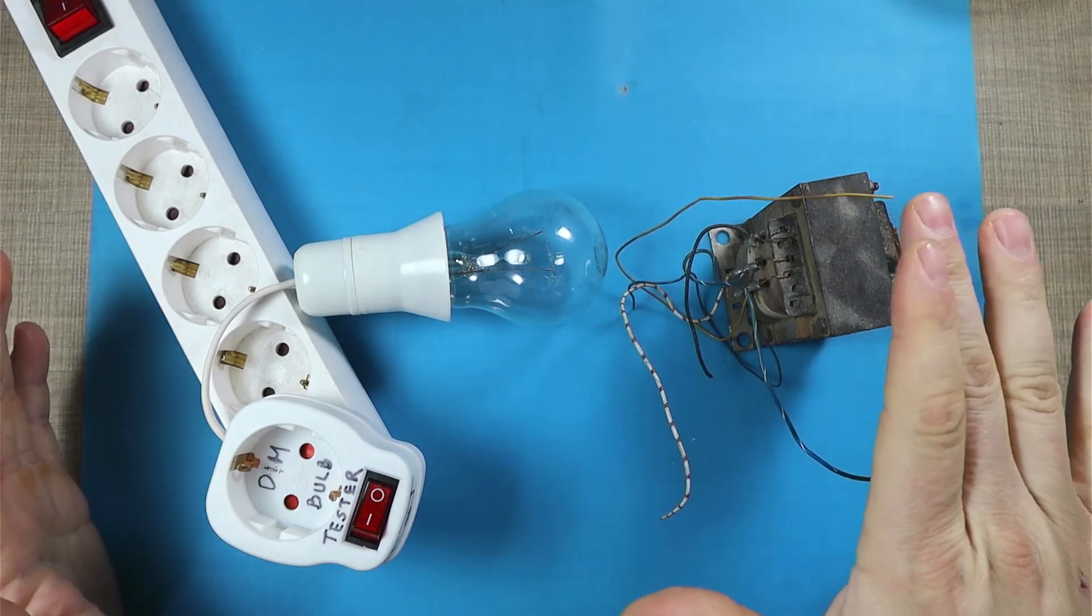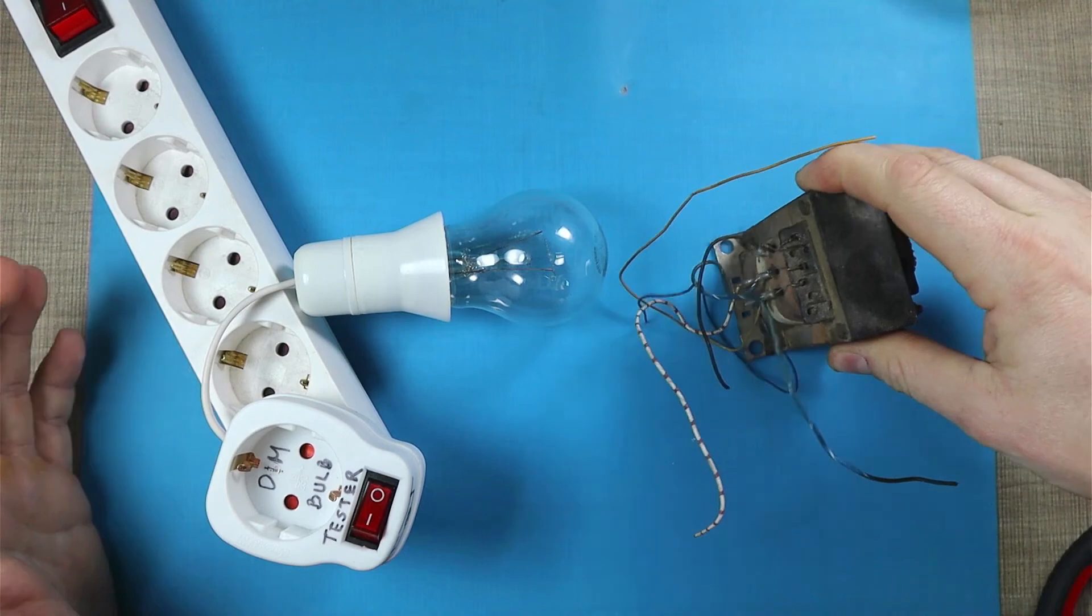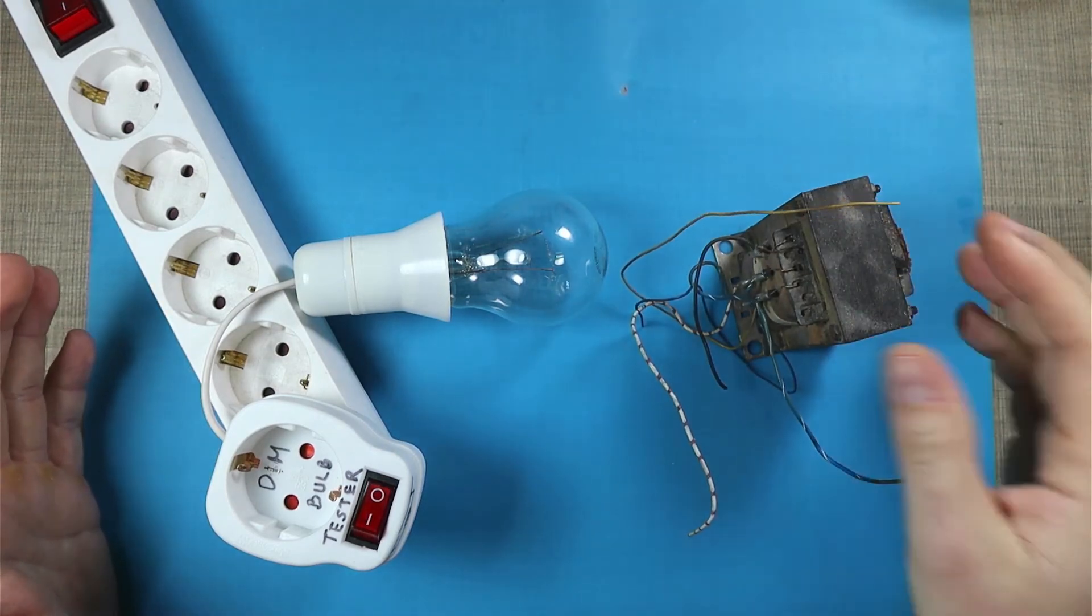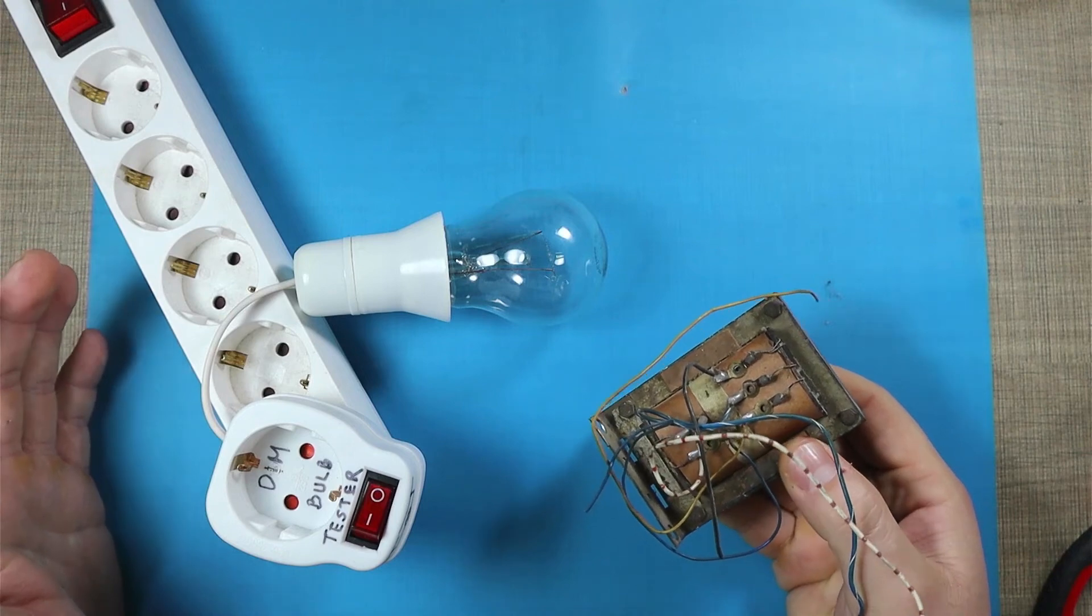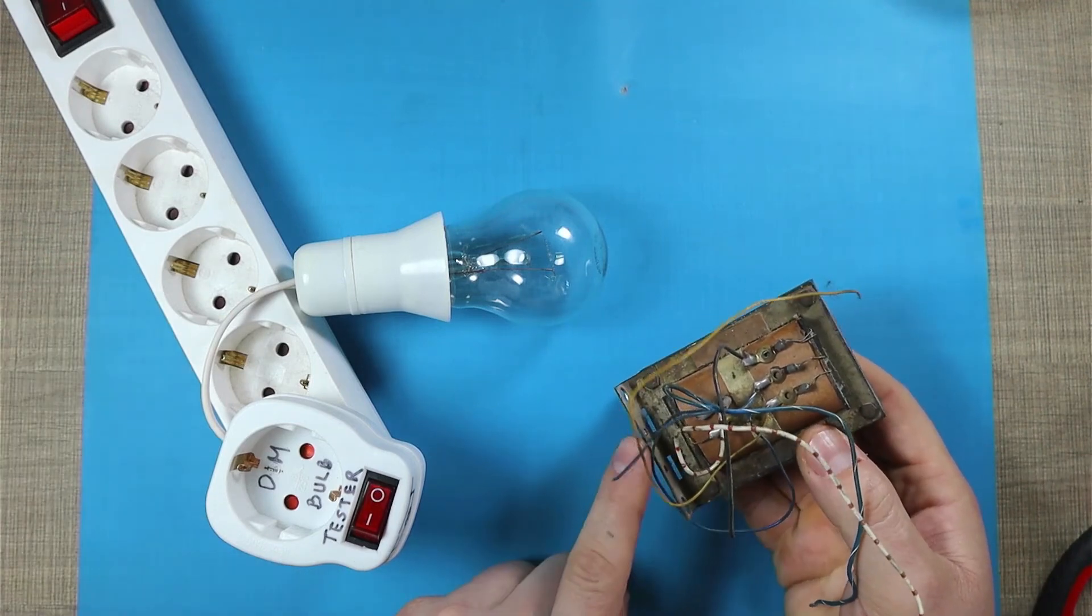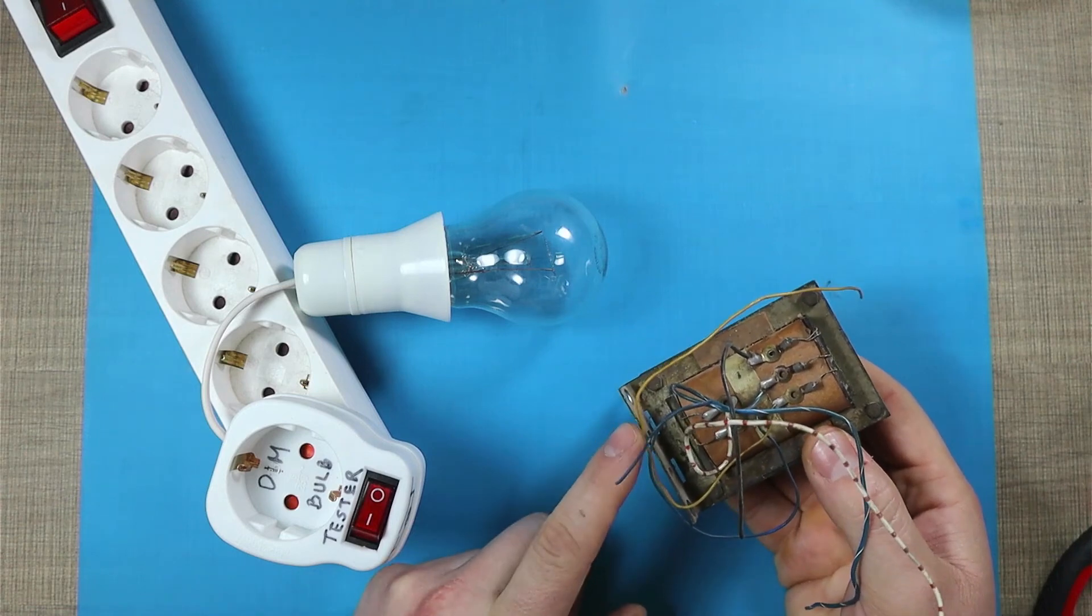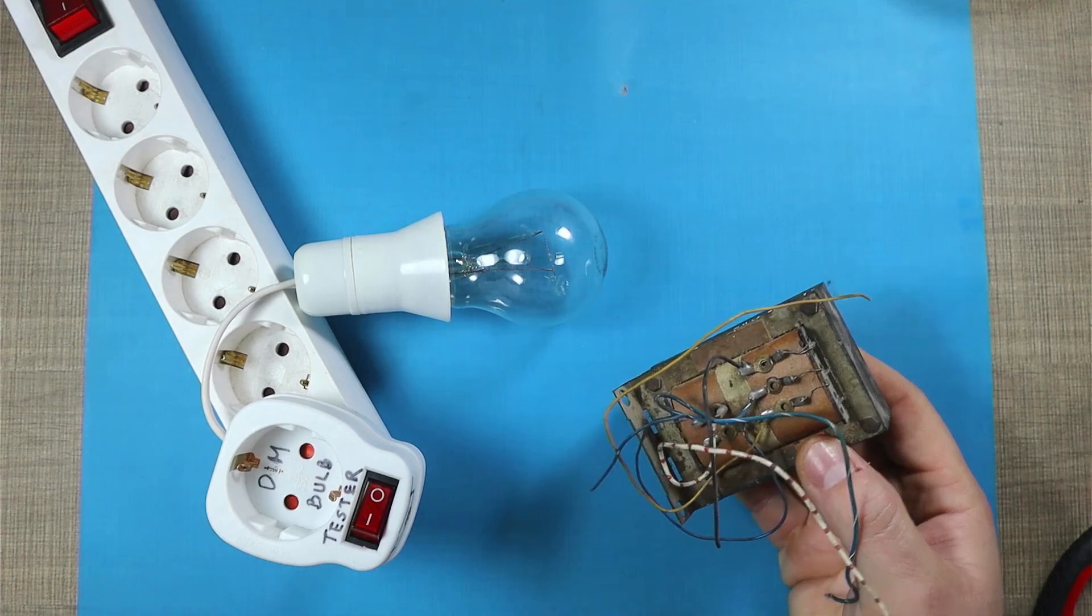This whole setup is also really handy when it comes to working with transformers like this one here. This one is a transformer that I've pulled out from some old equipment. I haven't tested it, so when I want to try and identify what the primary winding is and what the output voltages of this transformer are, I'm gonna connect it through this light bulb tester.